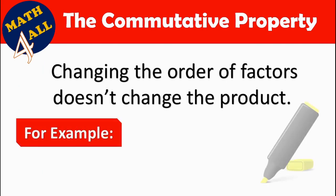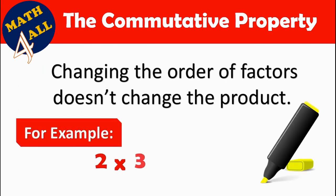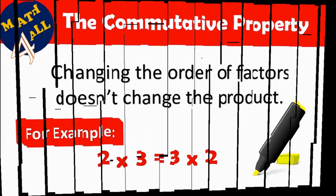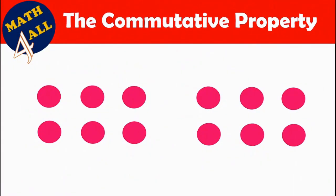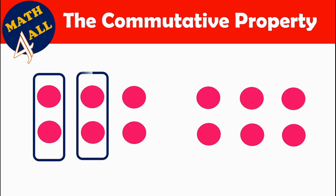For example, if you have 2 times 3, it's the same as 3 times 2. Let's explain the commutative property. If you have two sets, the first one you will break into three vertical columns and the second one